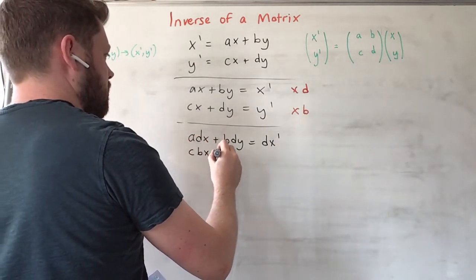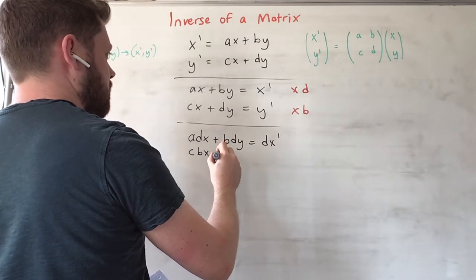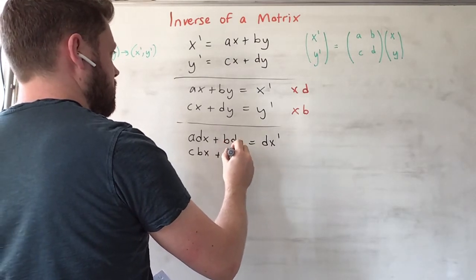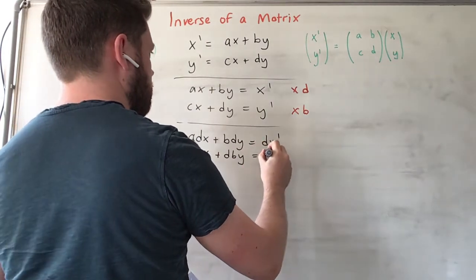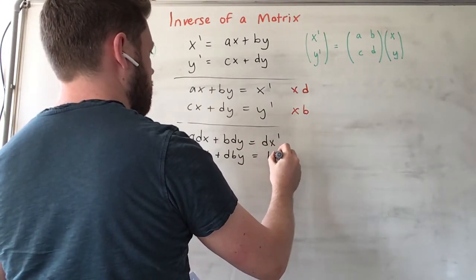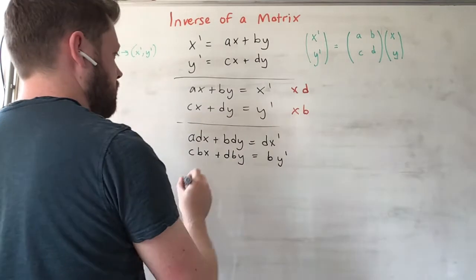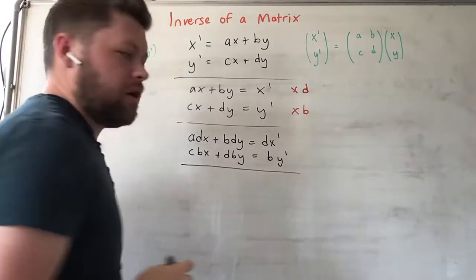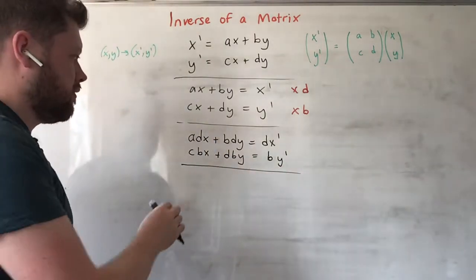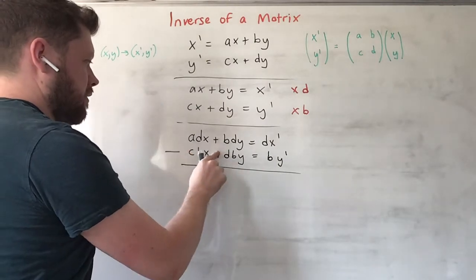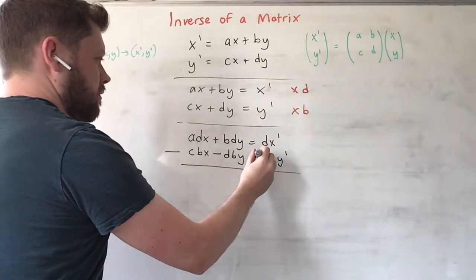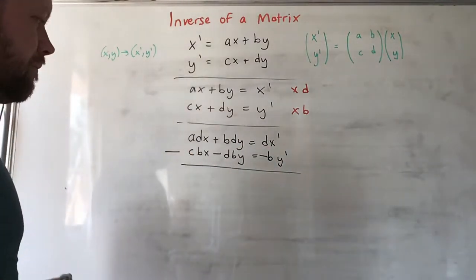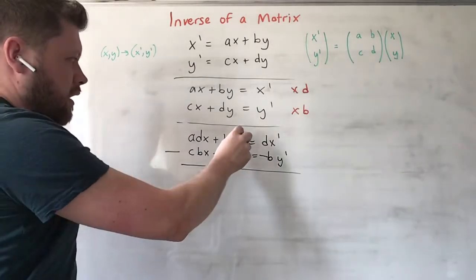This one is going to give you cbx + dby = by'. And now we subtract the two, so minus, minus, minus, minus.